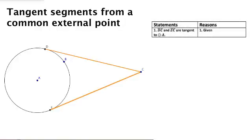To do this, we're going to construct an auxiliary segment connecting the common external point and the center of the circle.